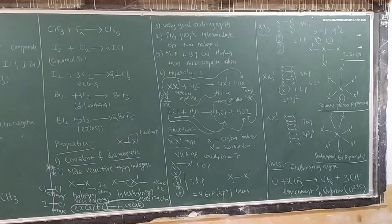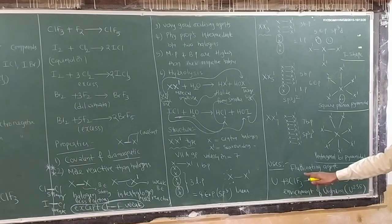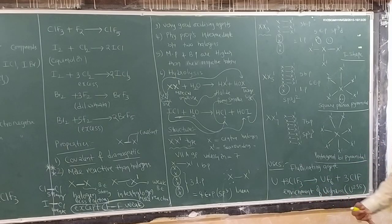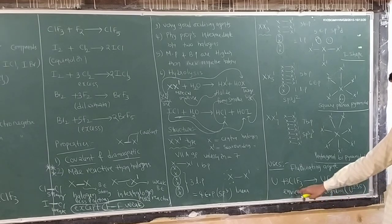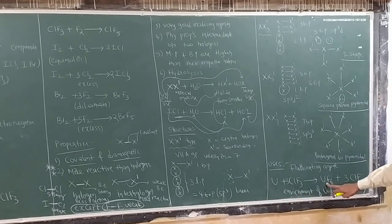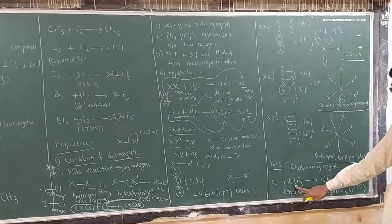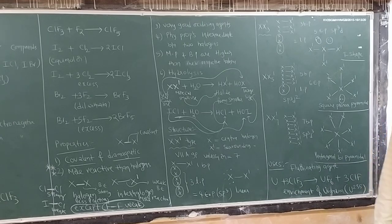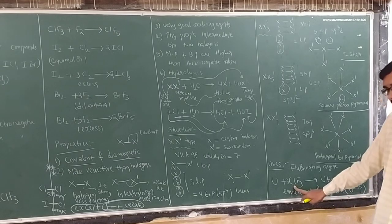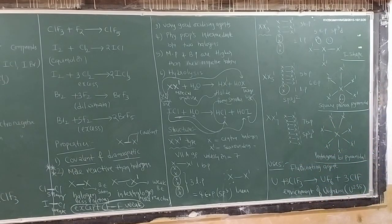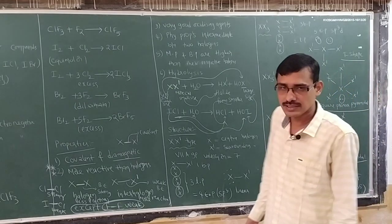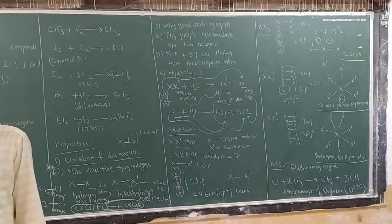Finally, the uses. The most important use of interhalogen compounds is as fluorinating agents — they provide fluorine. ClF5 is the best fluorinating agent, converting uranium (U3O8) to uranium hexafluoride (UF6). This is useful in the enrichment of uranium-235, as UF6 can be separated easily, which is important for nuclear applications.